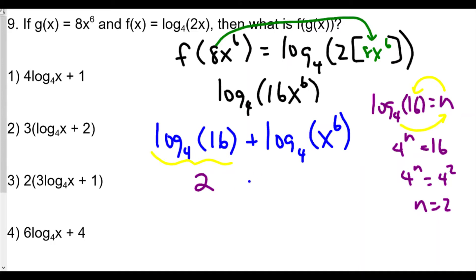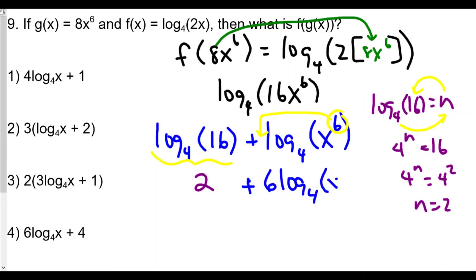The next thing we notice is that we have an exponent in log base 4 of x⁶, and none of the answer choices have exponents, so we'll use the power rule to bring the exponent down to become the coefficient of the log. The power rule says if the input has an exponent, we can move that exponent to the front to multiply the log. So this becomes 6 log base 4 of x.